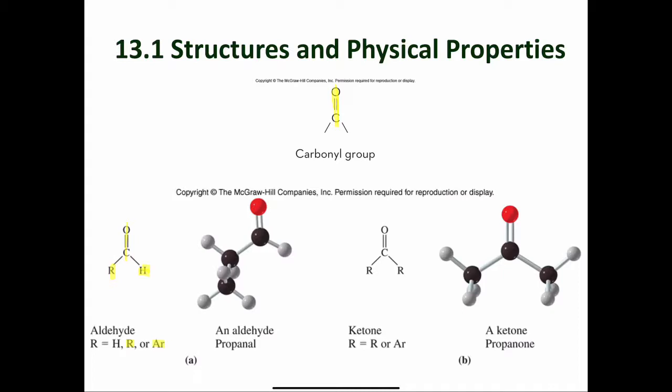In a ketone, the carbonyl group is flanked by R groups on both sides. The compounds shown here in the ball-and-stick models are propanol and propanone, and these are both three-carbon molecules. So we have carbon 1, 2, and 3 in propanol. And then propanone, which is also known as acetone — that's the common name — is a three-carbon molecule as well.